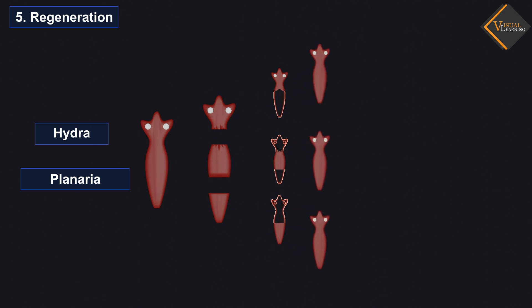The specialized cells proliferate and produce a large number of cells. These proliferated cells undergo changes and form different cells and tissues. The sequential process of these changes is known as development. Many fully differentiated organisms have the ability to give rise to new individual organisms from their body parts.